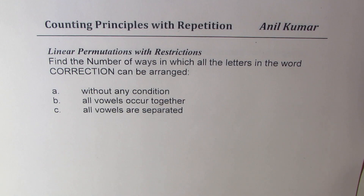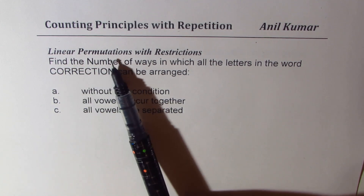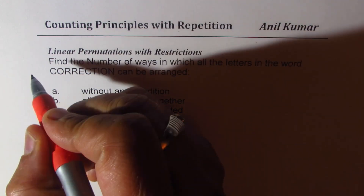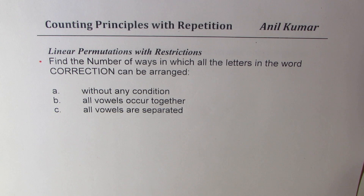I'm Anil Kumar, sharing with you a very important question based on counting principles. We'll have repetition of some characters in this particular example. Sometimes you'll see this question under the topic linear permutations with restrictions. The question here is: find the number of ways in which all the letters in the word CORRECTION can be arranged.